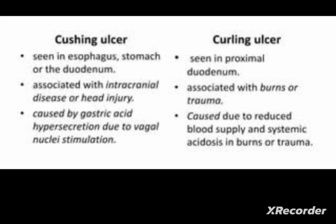Regarding clinical features, both Curling and Cushing ulcers present with bleeding, hematemesis, melena, coffee-brown appearance, and abdominal pain. In Curling ulcer, melena is the most common feature. Slight differences in clinical features may be seen depending on the location of the ulcer.